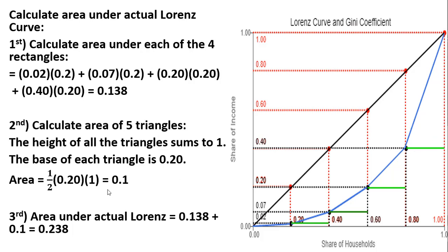The easiest way to do this is to recognize that the base of each triangle is 0.2. All these five triangles have a base of 0.2. And the height of these five triangles, if we add them up, is just one. So we're going to calculate the area of one giant triangle by doing one-half base times height, and it's just going to be 0.1.